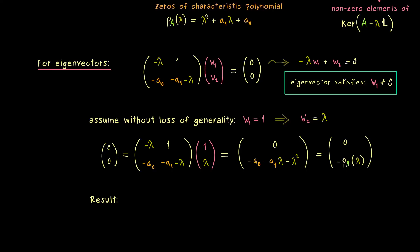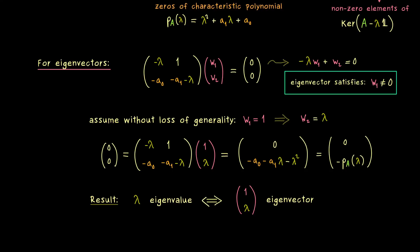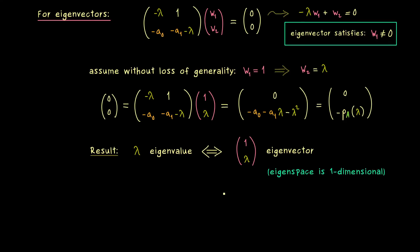So our first result is: eigenvalue implies eigenvector of the form (1, lambda). We can also read the equation the other way around — if (1, lambda) is an eigenvector, then the characteristic polynomial has a zero at lambda. So we actually have an equivalence. Moreover, the only other eigenvectors for a given eigenvalue are scaled versions of this vector, meaning the corresponding eigenspace is always exactly one-dimensional. This is a very important fact when considering the four cases for the two-dimensional ODE system.